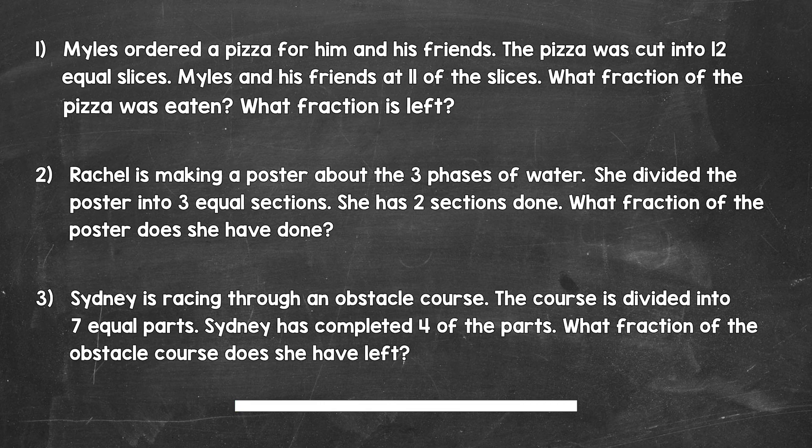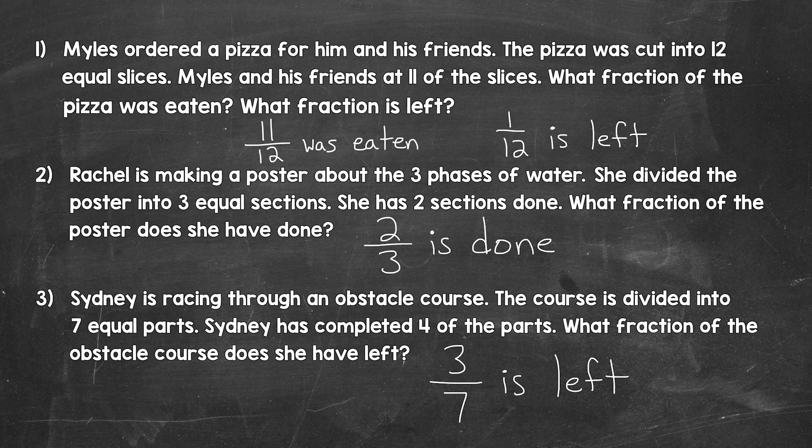Okay, so that's two minutes. Let's take a look at the answers. For number one, eleven twelfths of the pizza was eaten — eleven out of the twelve total pieces. One twelfth of the pizza is left — one piece out of the twelve total pieces. For number two, two thirds of the poster is done — two out of the three total sections. And lastly, for number three, three sevenths of the obstacle course is left. Four out of the seven parts have been completed, meaning three parts out of seven in total are left.